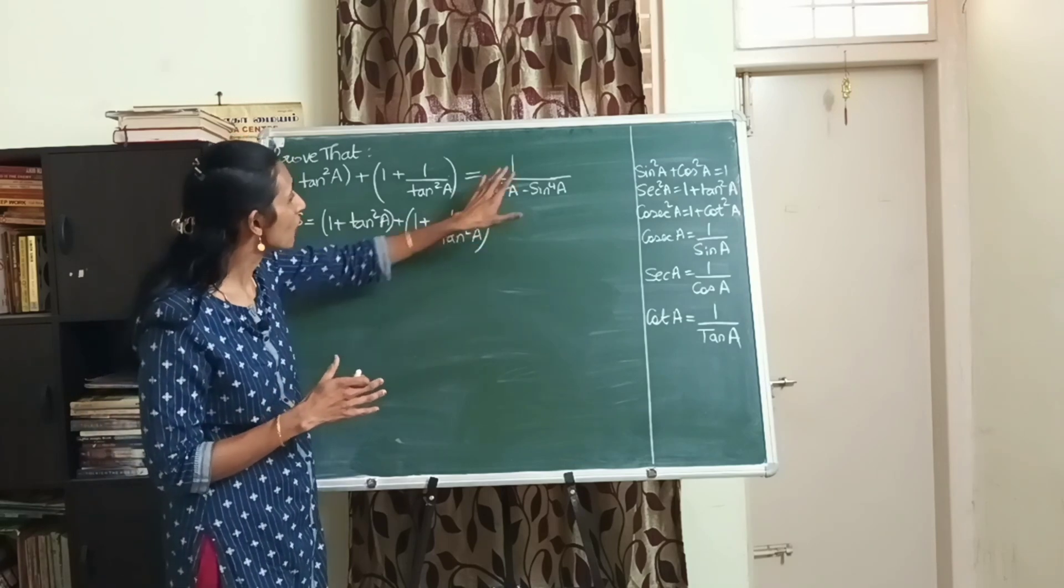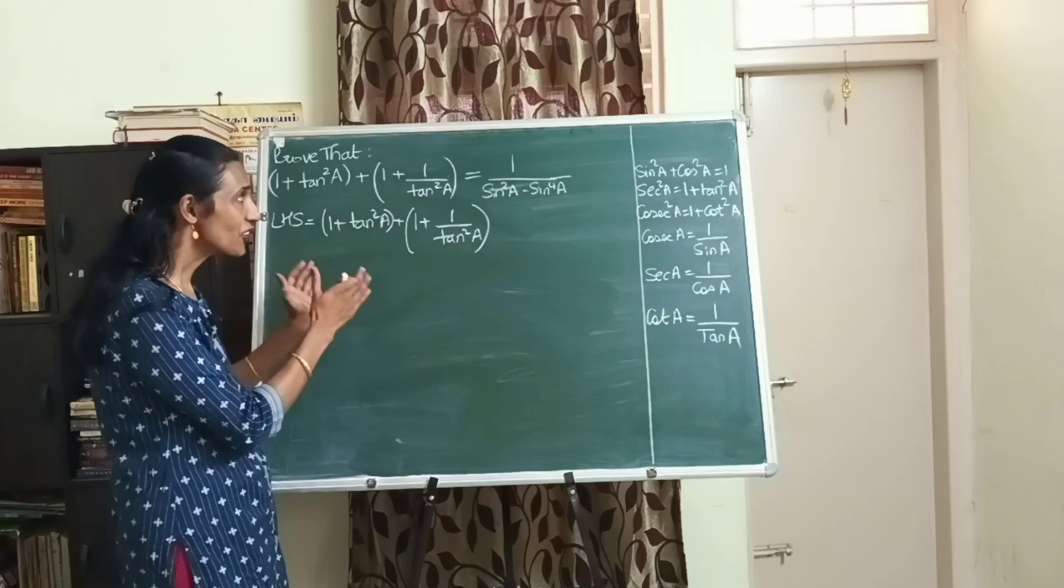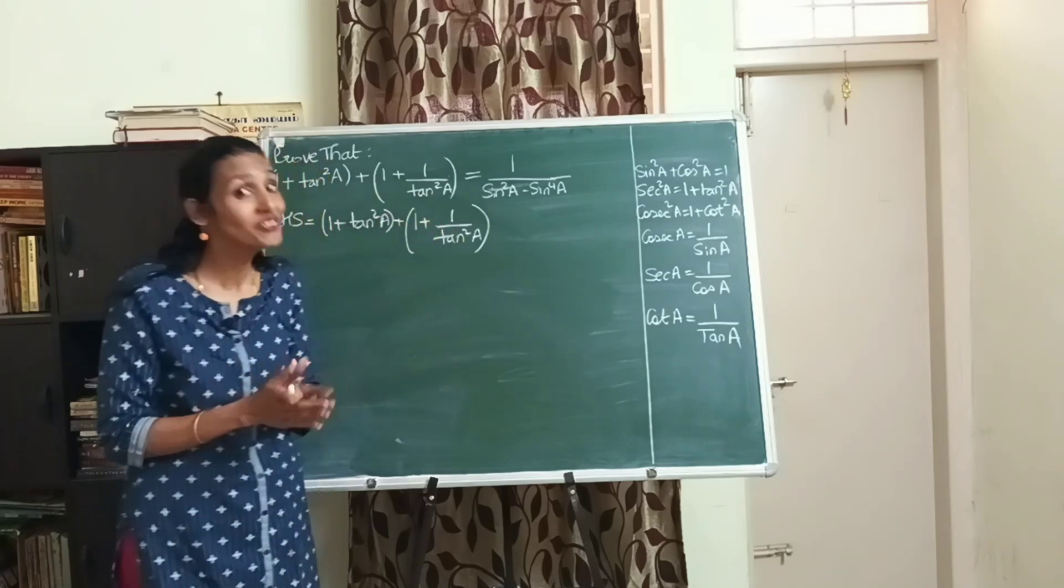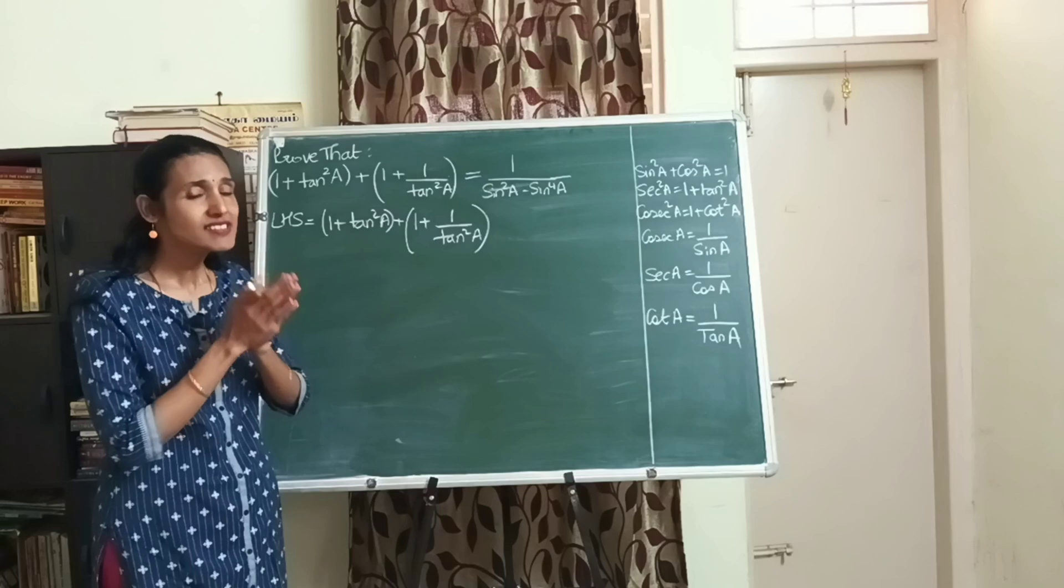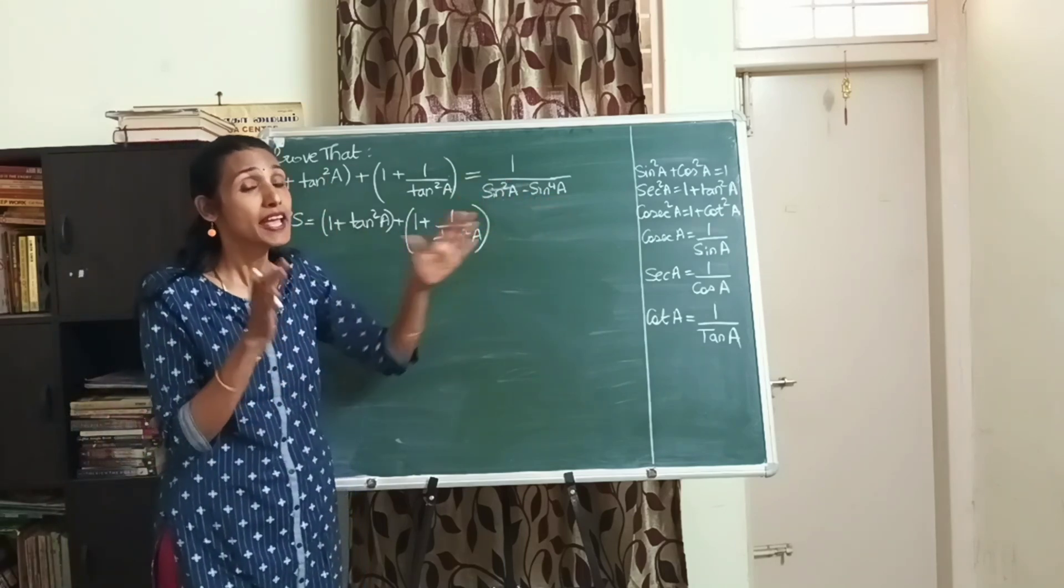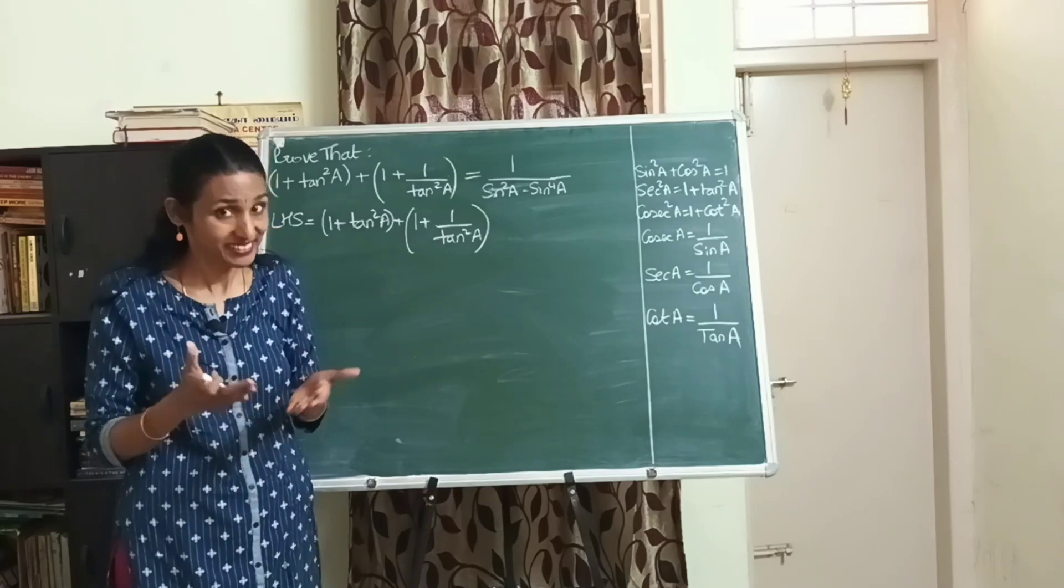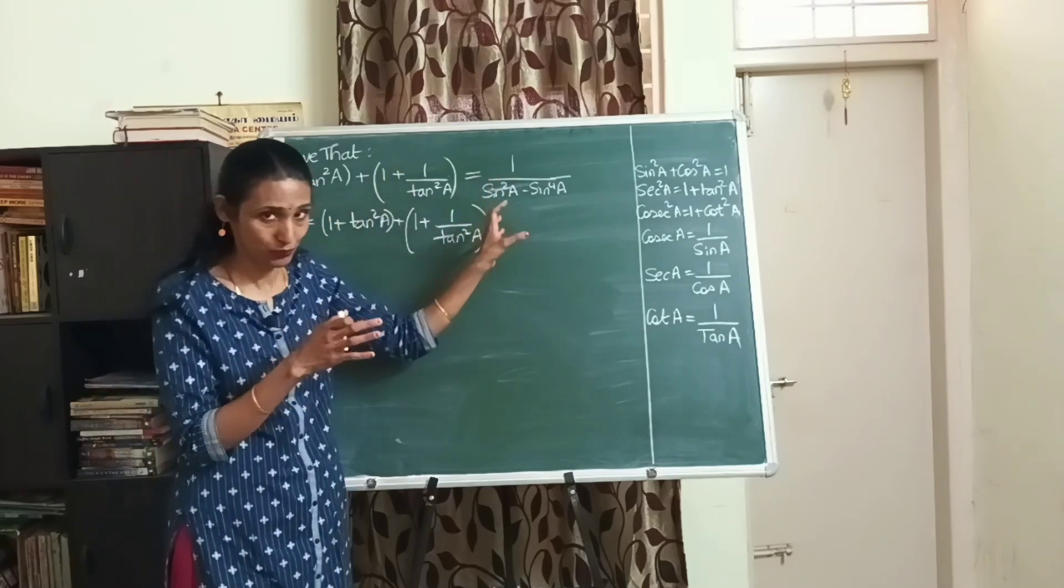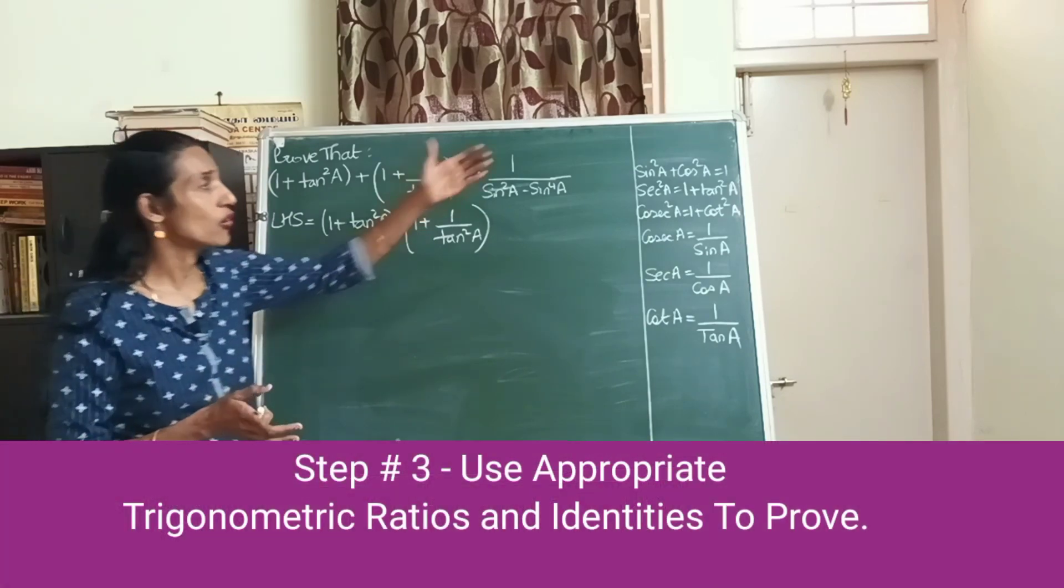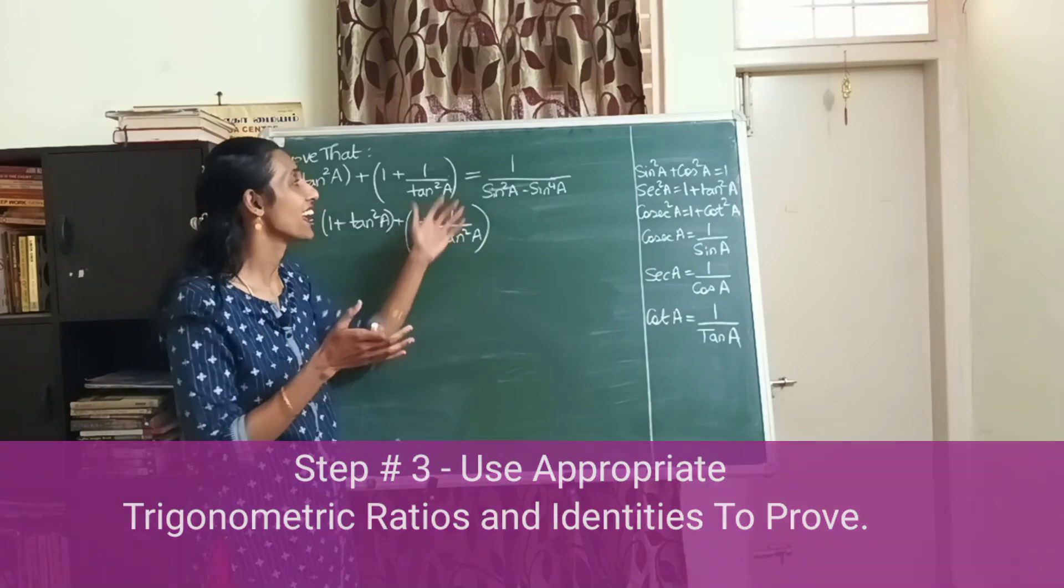What we have is 1 plus tan square a, there is also 1 by tan square a, but what we have to prove is 1 by sin square a and there is even a sin raised to 4a. So there is not much in common between what we have and what we have to prove. It's important to see what you have to prove, because if you don't know what you have to prove, how will you be able to prove it? Always keep in mind what you have to prove.